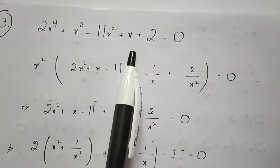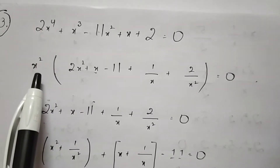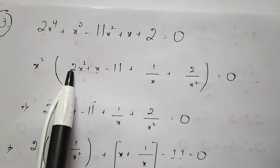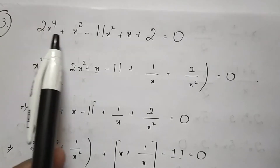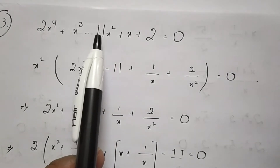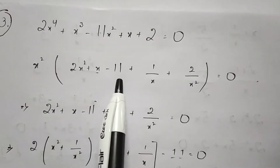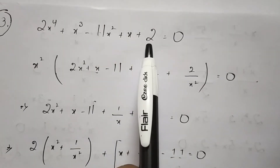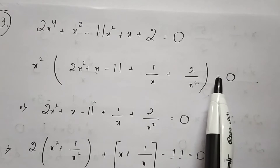We need to have degree 2. To convert the degree 4 into degree 2, we take x² as common. We get 2x². From x³, when we take x² common, we will get x. Minus from 11x², when we take x² common, we will get 11. Plus from x, when we take x² common, we get 1/x. From 2, when we take x² common, we get 2/x². This will be equal to 0.